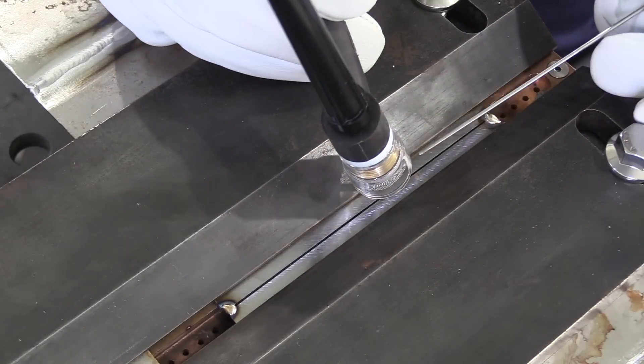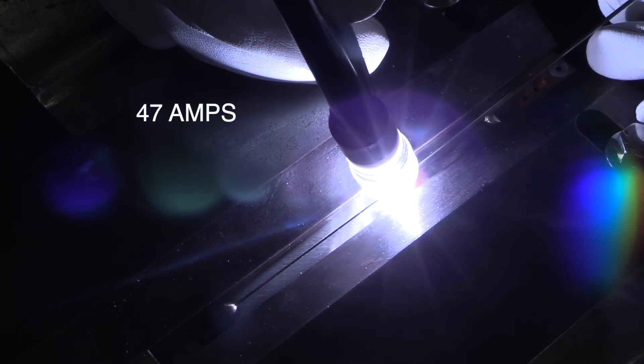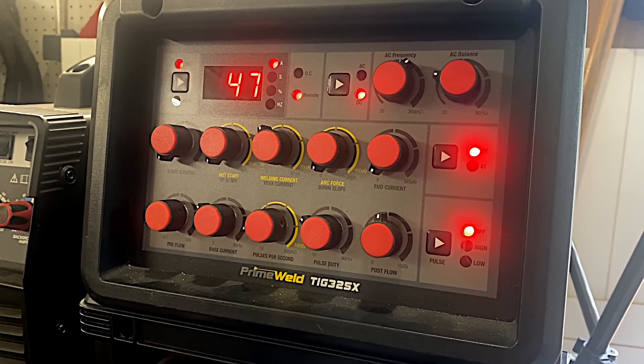The backstep technique is where you weld a short bead, and then you back up, and you weld to the previous bead. That might not make sense to you right now, but it will in just a minute. I'm going to weld this six-inch piece in thirds, so I'm only going to weld about a two-inch run here to the end tack.